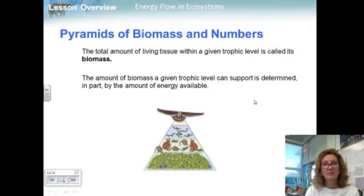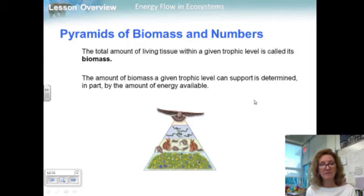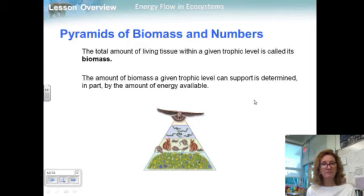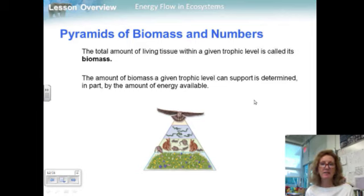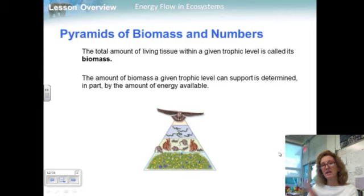The next pyramid is the pyramid of biomass. Biomass is the total amount of living tissue within a given trophic level. The amount of biomass in a given trophic level is determined in part by the amount of energy available. A pyramid of biomass illustrates the relative amount of living organic matter at each trophic level. Typically, the greatest biomass is at the base of the pyramid, as seen in the field ecosystem modeled here — all the grass and trees outside represent where most of the biomass is.